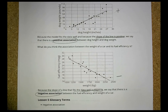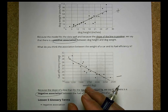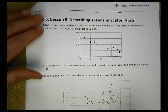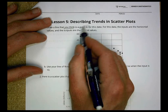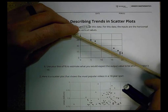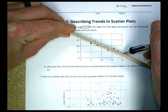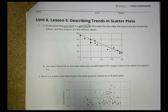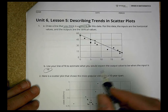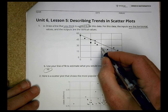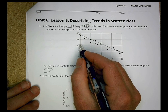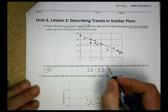We'll pause there and give you a chance to work on your homework. Unit 6, Lesson 5 homework: draw a line that you think is a good fit for this data. The inputs are the horizontal values, outputs are the vertical values — find a line of best fit by getting right about the middle of all the data. Then use your line of fit to estimate the output value when the input is 10. Looking at x=10, I go across and count — probably about 32 or 33 for the output.